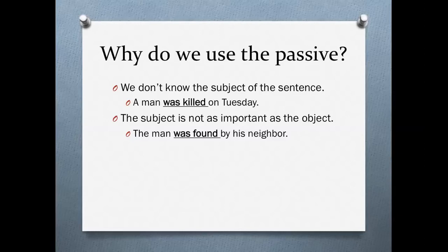Another reason we use the passive is that the subject is not as important as the object. We know who did the action, but that's not what's important — what's important is who received the action. So we're talking about this man who's dead. We say the man was found by his neighbor. We could say his neighbor found the man, but we don't care about the neighbor — the neighbor is not important. This is a murder, a crime. The police care about the man. They want to find out who killed him. So we make the man the subject, and we make the neighbor the object.